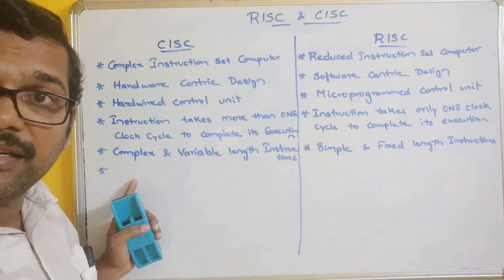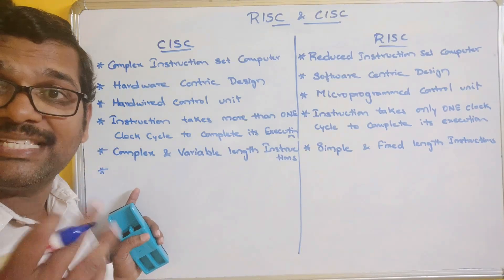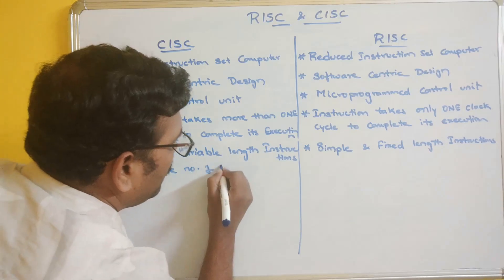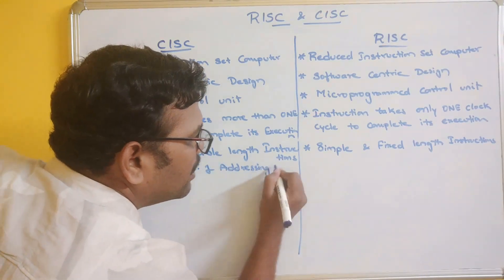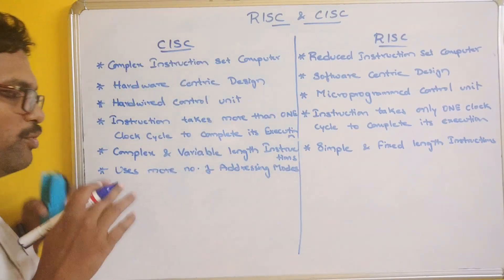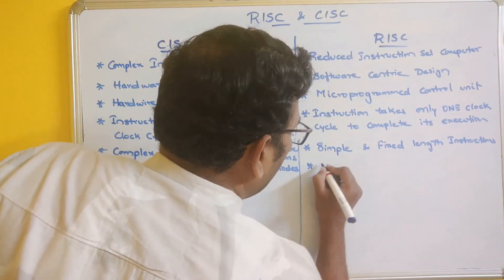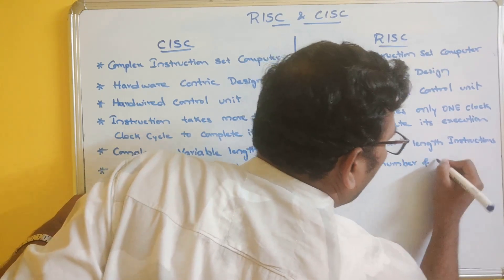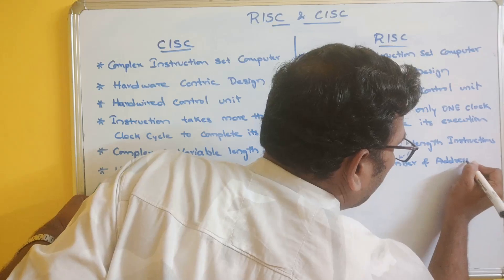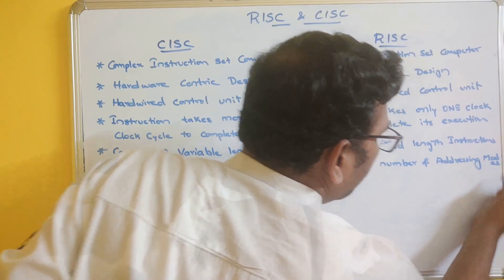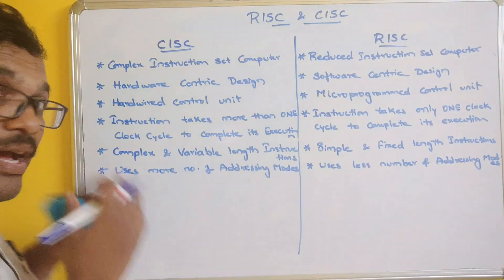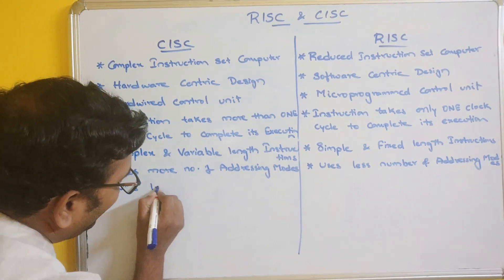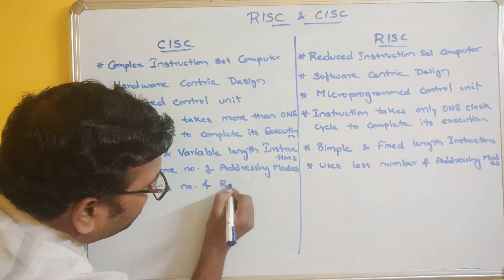CISC uses more number of addressing modes — we have seen different addressing modes. This CISC architecture will be using more number of addressing modes. RISC uses less number of addressing modes. CISC also uses less number of registers, whereas RISC uses more number of registers in order to store values.